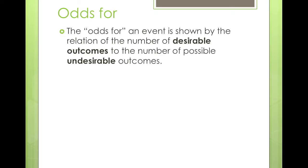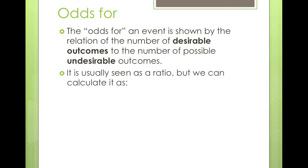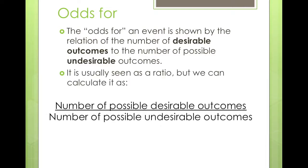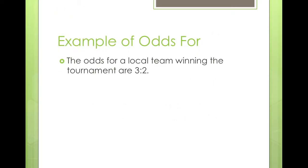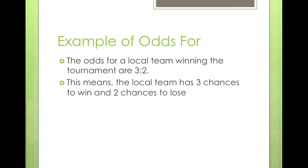The odds for an event is shown by the ratio of the number of desirable outcomes to the number of possible undesirable outcomes. It is usually seen as a ratio: the number of possible desirable outcomes to the number of possible undesirable outcomes. For example, the odds for a local team winning the tournament are three to two, meaning the team has three chances to win and two chances to lose — desirable to undesirable.